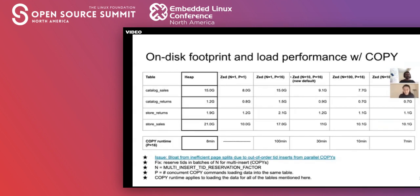Let's talk about some performance numbers for ZStore. Looking at the on-disk footprint: the baseline is heap. For ZStore loaded with one COPY session, it takes about half the size of heap, which is a pretty good result. However, if you run 16 parallel COPY sessions into the same table at the same time, we get a lot of bloat. The size goes up to almost equal to heap, which is pretty undesirable.